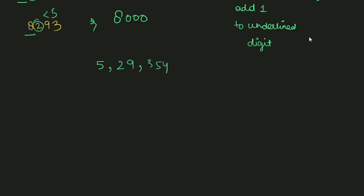So let's take a very big number: 5,29,354. I have to round off to the lakh place. The lakh place digit is 5, so I underline it. Now I compare the digit just before it — that is at the ten-thousands place — which is 2. Since 2 is smaller than 5, we round down. The digit stays as 5 and all digits after become 0, giving us 5,00,000.